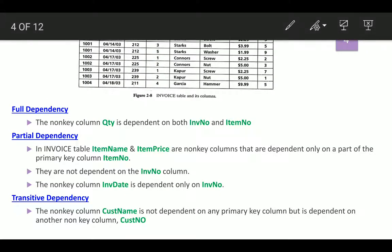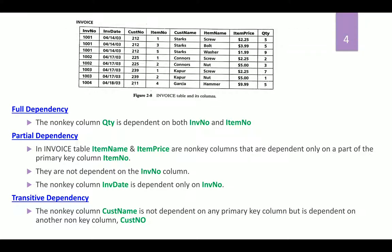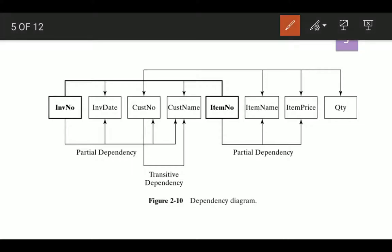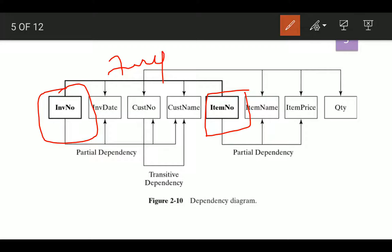This is the example table from our previous class that depicts the types of dependencies. For full dependency, the quantity column depends on invoice number and item number. For partial dependency, the primary key item number is the determinant for item name and item price. For transitive dependency, the non-key column customer name is dependent on the non-key column customer number. In the dependency diagram, the primary key is depicted in bold and highlighted, with full dependencies shown above and partial and transitive dependencies shown below the boxes.